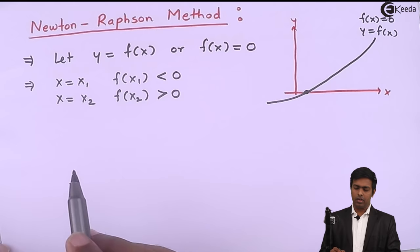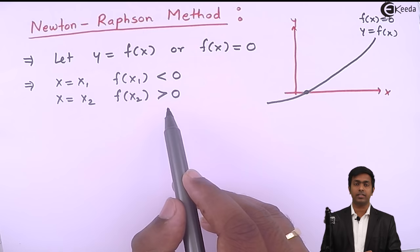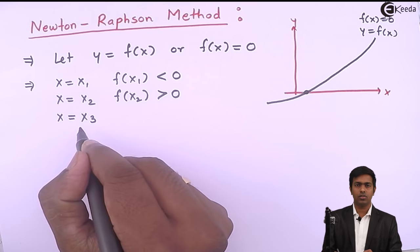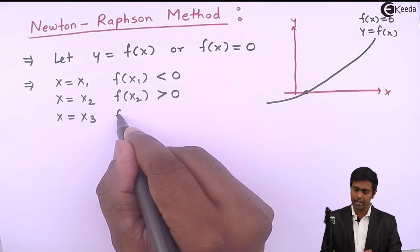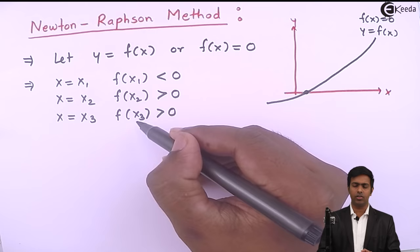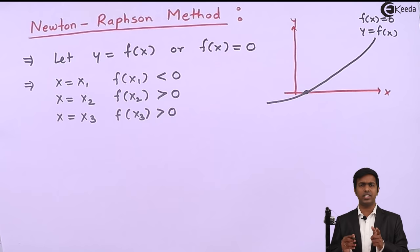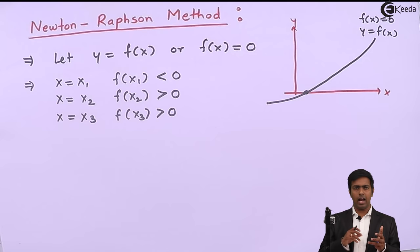It is possible that you will not get one negative and one positive value in the first two tries. You may get both less than 0 and have to check a third value. If the third gives a value greater than 0, we consider the second and third cases, since the second is negative and the third is positive. Always remember: whenever the function value changes sign between two x values, the root lies between those two values.